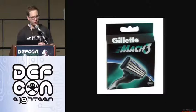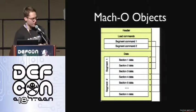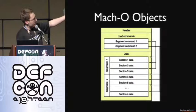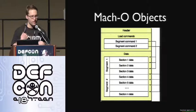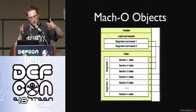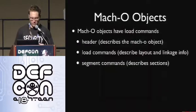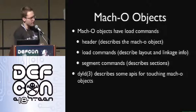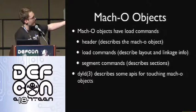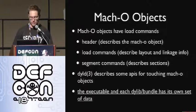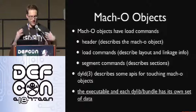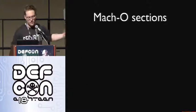The other binary format we care about is the Mach-O binary format, used on OSX. It starts with a header and consists of a bunch of load commands. Load commands describe the way the binary is going to be laid out in memory. There's a segment command — a pretty important one that describes how segments are laid out. Much like ELF, you have segments and segments contain sections. The DYLD man page on Mac has APIs for touching Mach-O objects, so you can iterate through the objects mapped into the process. Just like ELF, each dylib or bundle that gets loaded has its own set of data.